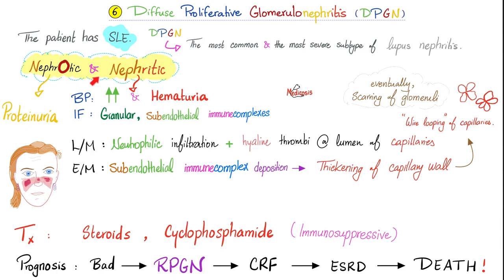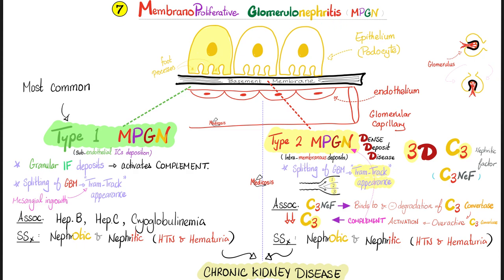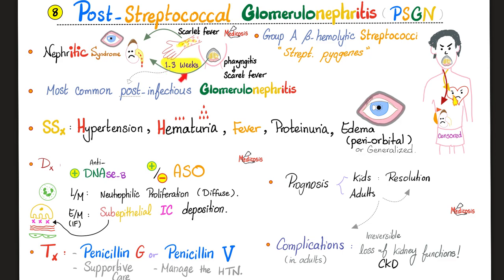Diffuse proliferative glomerulonephritis: both nephrotic and nephritic — remember lupus and the wire-loop lesion. Membranoproliferative has two types: Type 1 is subendothelial, associated with hep B, hep C, cryoglobulinemia. Type 2 goes into the basement membrane and is associated with C3 nephritic factor. Post-streptococcal GN: delayed 1 to 3 weeks after pharyngitis. Group A beta-hemolytic strep; treat with ASO, DNase B, and penicillin. If the patient is allergic to penicillin, give erythromycin.